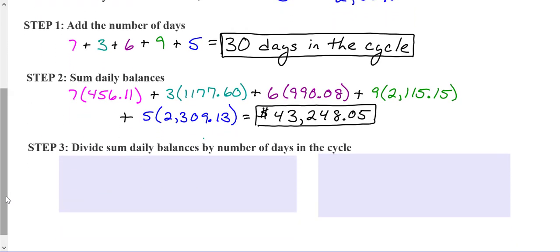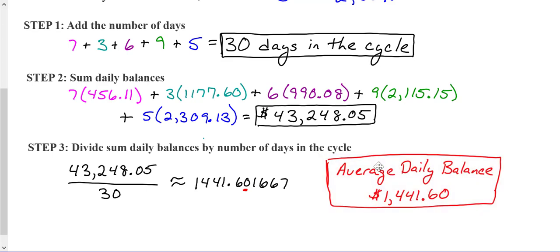The last step would be to take the sum of daily balances and divide it by the number of days in the cycle. And this would give us an average of approximately $1,441.601667. And because we are dealing with money, we want to remember to round it up to the second decimal position. And when we do that, Rebecca's average daily balance was $1,441.60. And we are going to take that average daily balance and calculate her finance charge now.